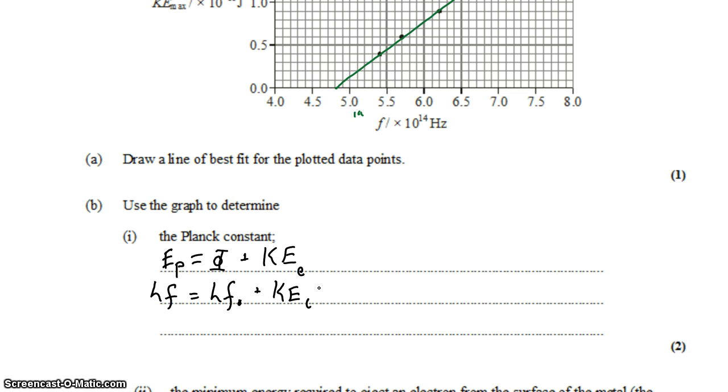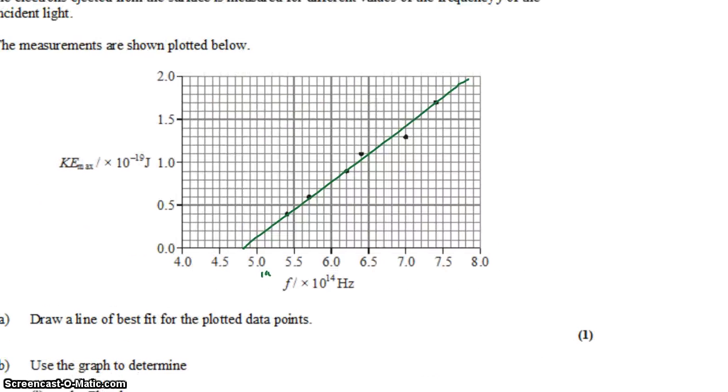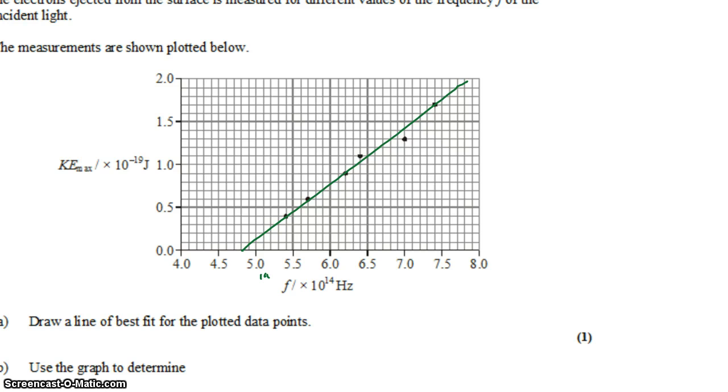The last thing I'll do is rearrange this equation and solve for kinetic energy of the electron. We get what appears to be a linear equation with our y variable and x variable, and h is the slope. So h, Planck's constant, is what we wanted—the slope. To get the slope of this line, I want to use the largest triangle possible.